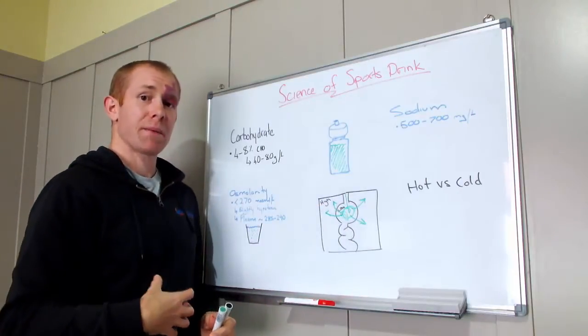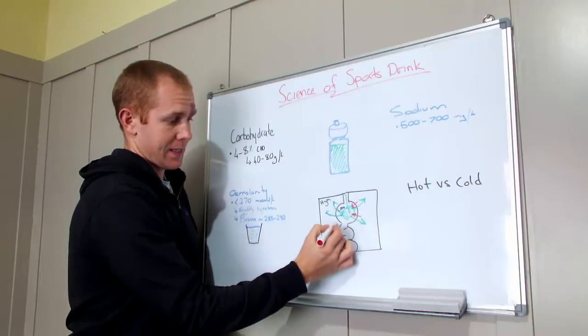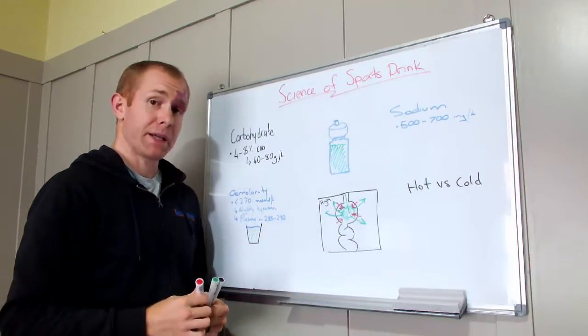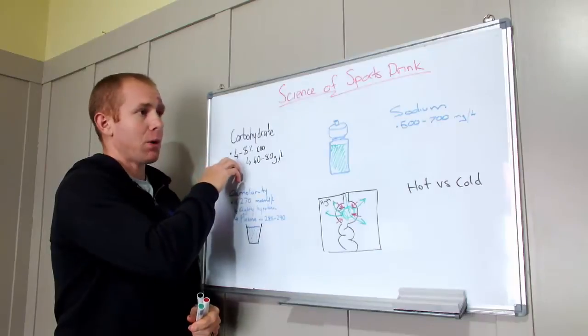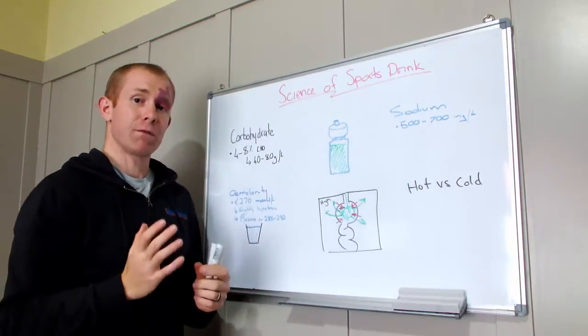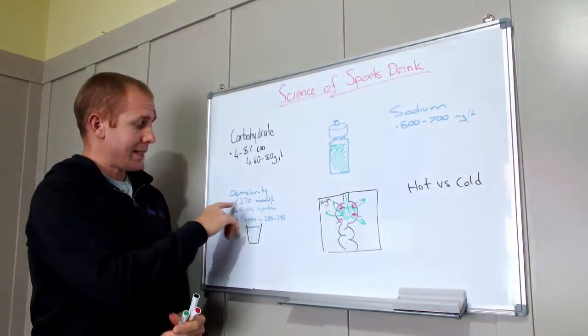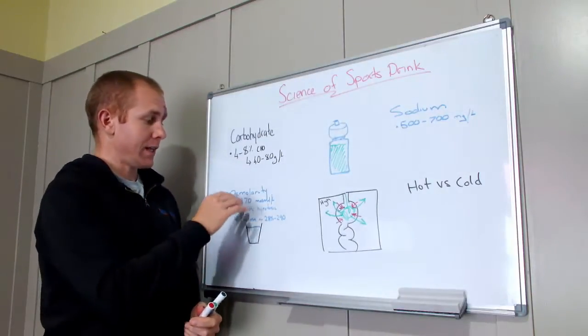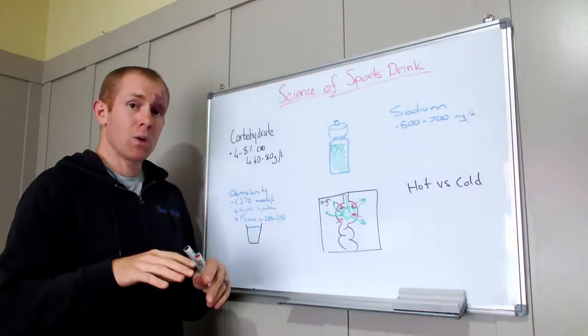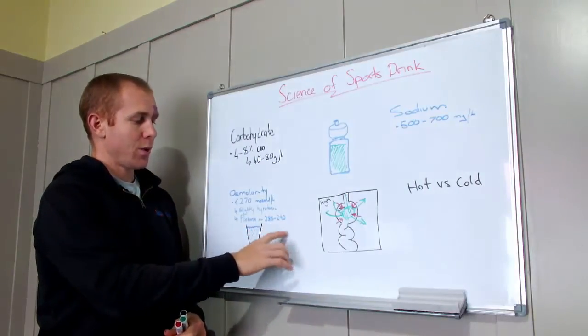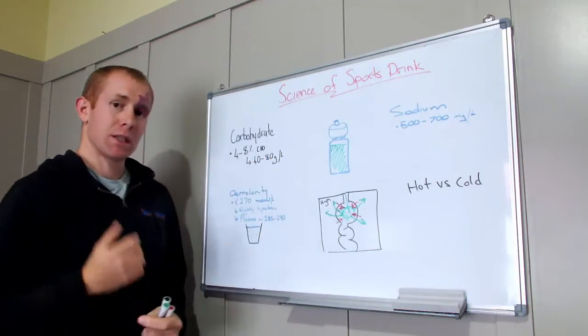If the concentration inside your stomach is too high, what happens is the body has to secrete fluid back into your stomach to dilute whatever's in there so it can be absorbed. So this is where it comes back to carbohydrate and sodium being in the right levels so that what you're drinking is actually being absorbed. And the ideal osmolarity we want to hit is somewhere under 270 milliosmoles. And this is slightly hypotonic, so below the osmolarity of your plasma, which is somewhere between 285 and 290 depending on who you are. So it's really important that we get this balance right to maximise the absorption rate.